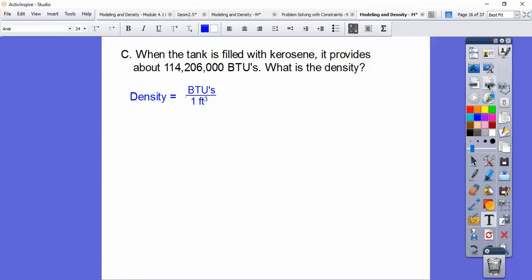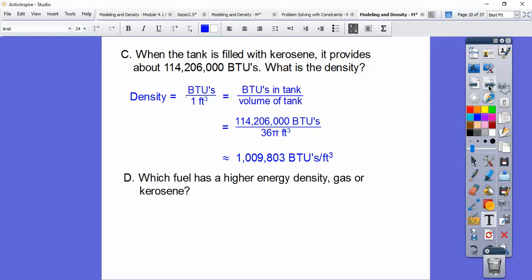So remember, density is BTUs, or this is what we're looking for, the BTUs per one cubic foot. This is when it's full, so we've got to divide it by the whole volume of cubic feet. So we're going to punch those in, and then when we do that, we get about 1,009,803 BTUs per one cubic foot.